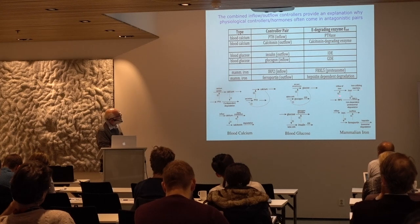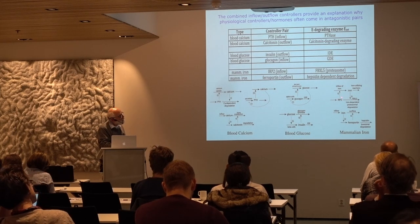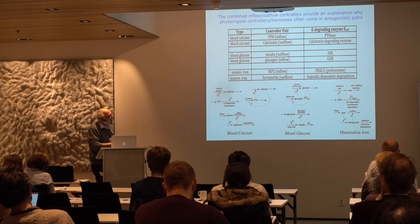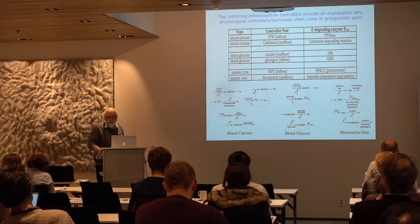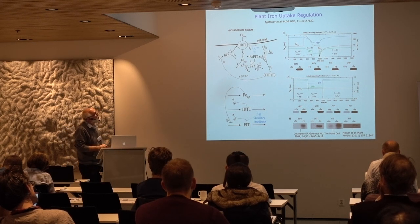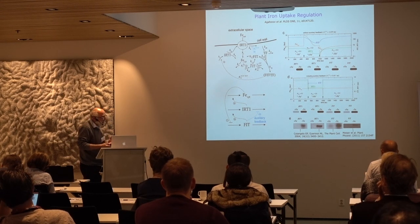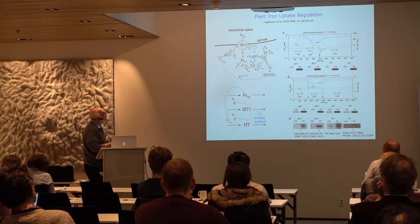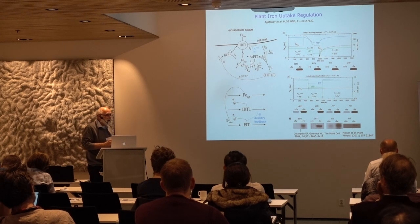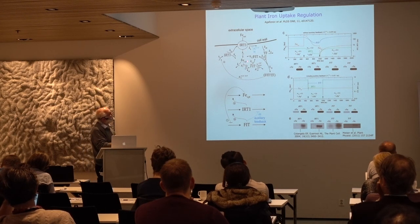In mammalian iron, many iron transporters have an inherent negative feedback where the transporter itself is subject to metal-ion degradation, causing an inflow type of controller. I would like to briefly illustrate that with a system we have studied: plant iron uptake regulation. This is a system where the transporter is IRT1 in plants. Iron in the soil is heavily bound as iron oxide, and plants therefore use an inflow type of controller to maintain their iron concentrations.